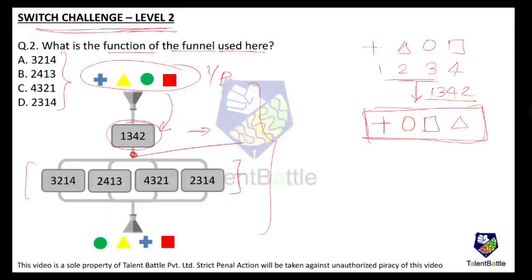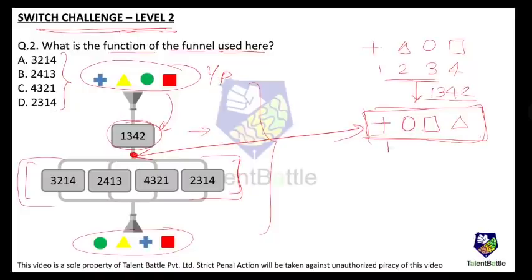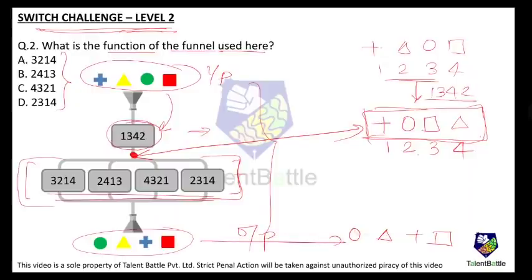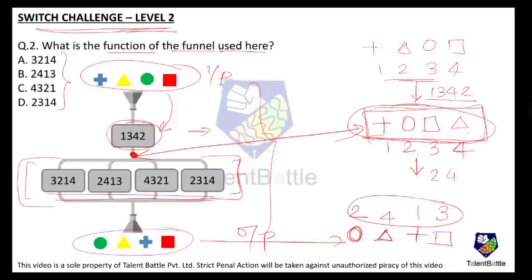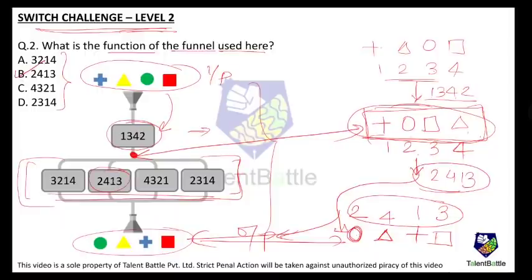This rearranged output becomes the input for the second funnel. Assign fresh numbers 1, 2, 3, 4 to this intermediate input. The desired final output is: circle, triangle, plus sign, square. Circle is at position 2, triangle at 4, plus sign at 1, square at 3. So we subject this intermediate input to function 2 4 1 3 to get the final output. The answer is 2 4 1 3, option B.